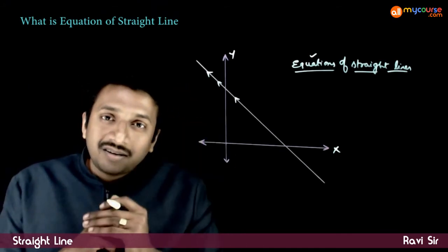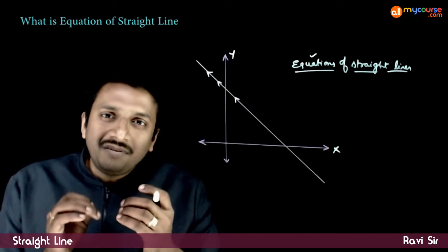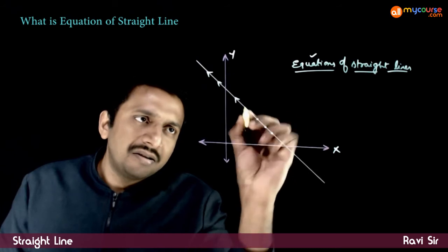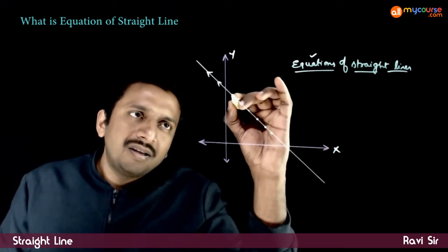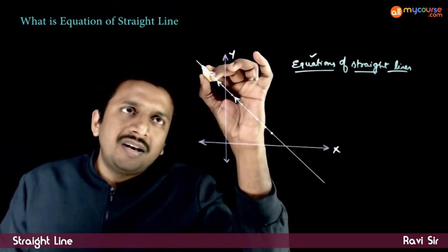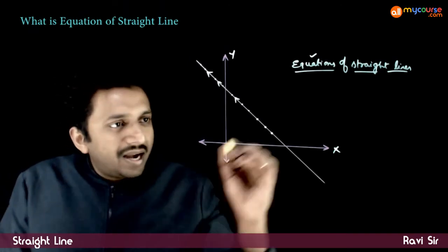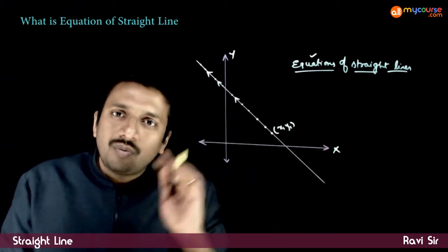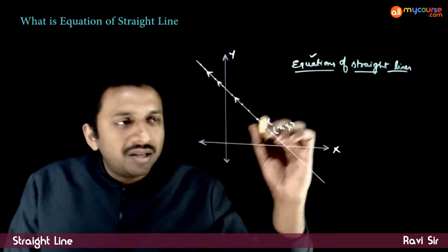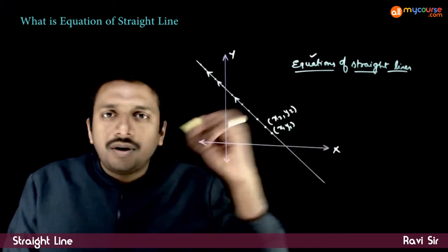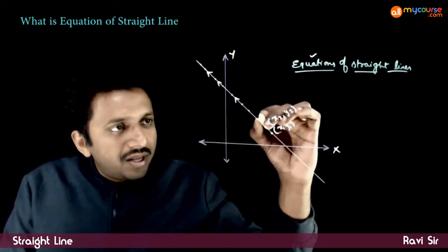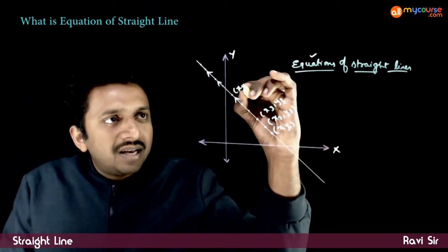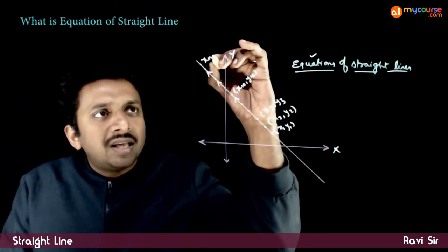A straight line is made up of an infinite number of points — it is a collection of different points. Each point will have its own x coordinate and its own y coordinate. If you go to one point, the x coordinate may be x2, the y coordinate may be y2. The next point may be x3, y3, and so on up to x10, y10, and further to xn.